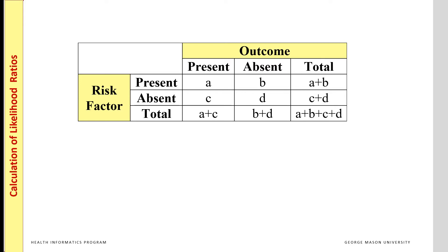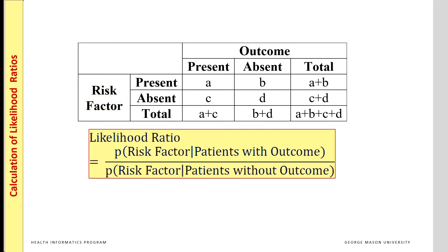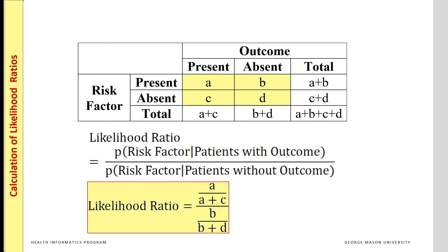The relationship between risk factor and outcome can also be examined in a contingency table. The likelihood ratio in this context tells us how informative the risk factor is in predicting the outcome. The contingency table reports the number of times the outcome and the risk factor co-occur. We can therefore calculate the likelihood ratio from this data. The two conditional probabilities are the presence of the risk factor given the patient has the outcome being assessed, and the presence of the risk factor given that the patient does not have the outcome being assessed. These two probabilities help determine the likelihood ratio.